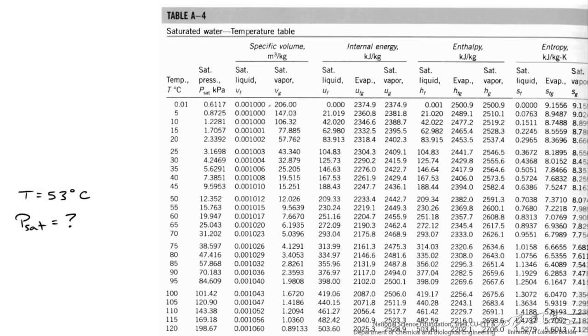So let's say we are looking at the saturated water table and we want to figure out the saturation pressure at a temperature of 53 degrees C. There is data at 50 degrees C and saturation pressure data at 55 degrees C but nothing at 53.